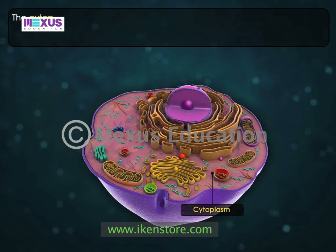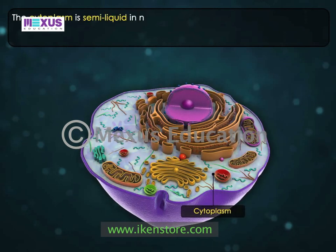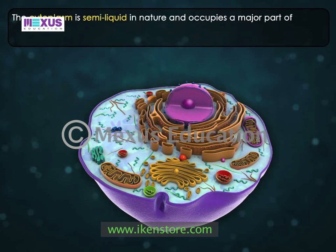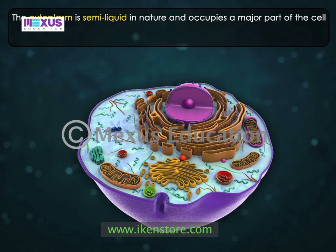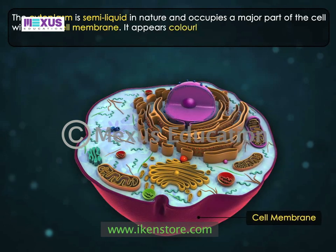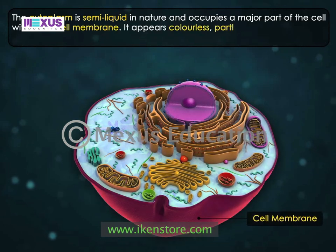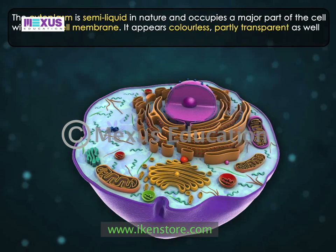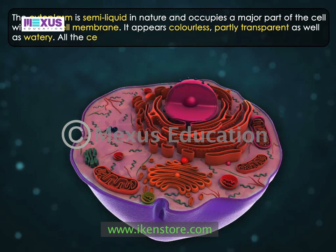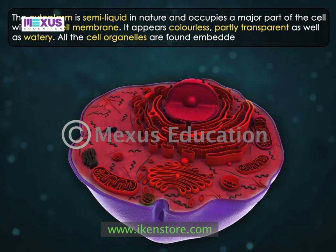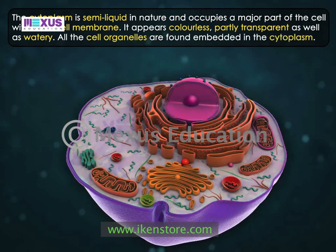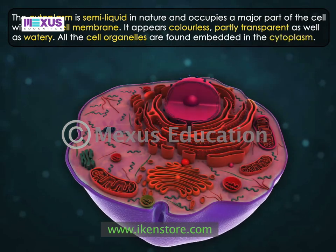The cytoplasm is semi-liquid in nature and occupies a major part of the cell within the cell membrane. It appears colorless, partly transparent, as well as watery. All the cell organelles are found embedded in the cytoplasm. Let us take a look at them.